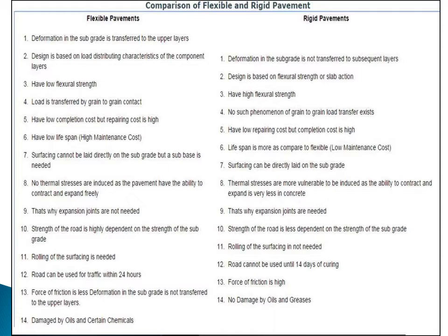The tenth point: the strength of the road in flexible pavement is highly dependent on the strength of the subgrade soil, because load is transferred to the lower layers and flexible pavement has low flexural strength. Whereas in rigid pavement, the road strength is less dependent on the subgrade soil strength — because of the slab action and good flexural strength, less load is transferred to the subgrade.